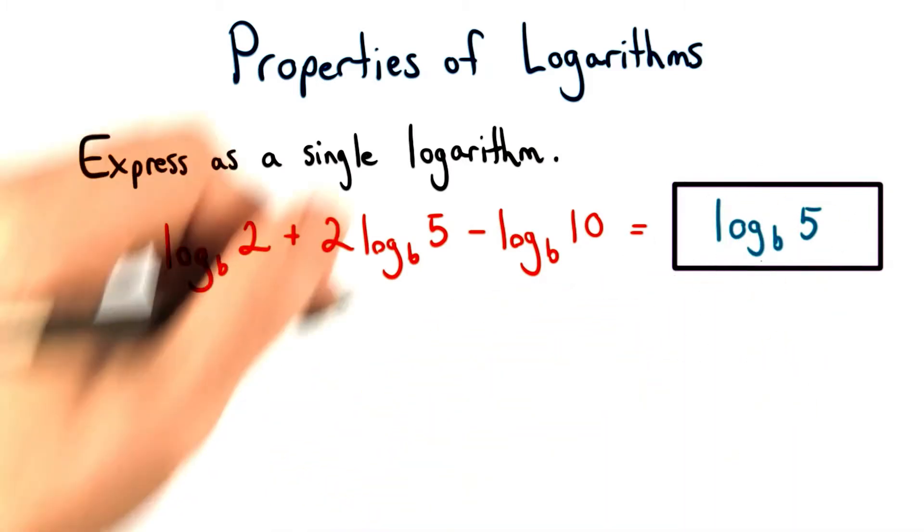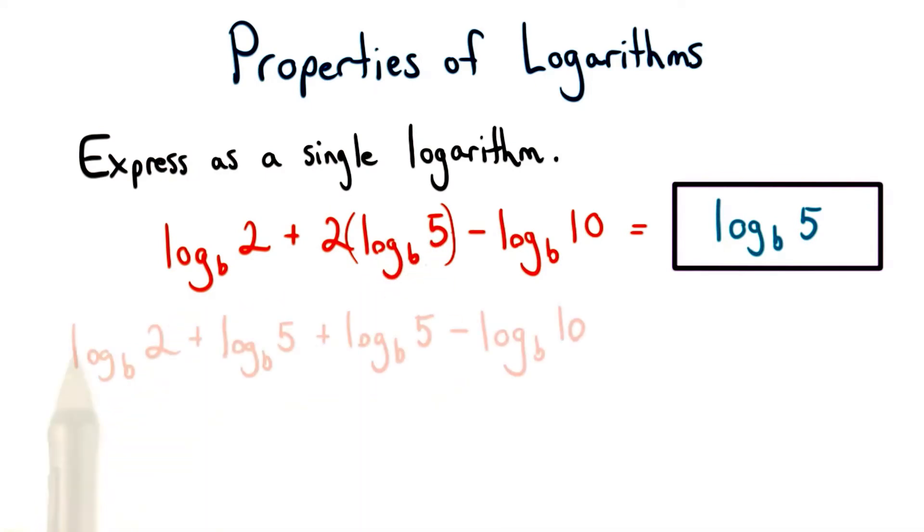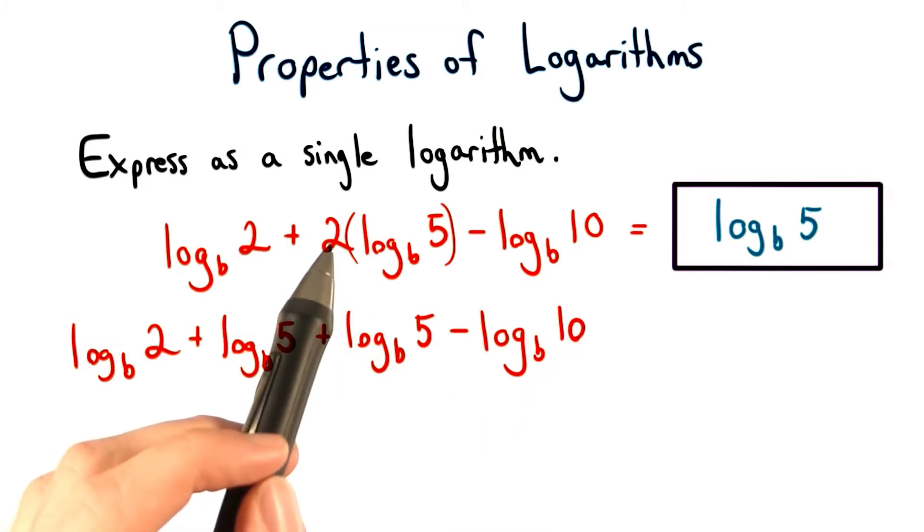Now to start, I think it's best to think about this as two logarithms of base b of 5. If I write this line all out, I see I have log base b of 2 plus log base b of 5 plus log base b of 5 minus log base b of 10. And notice that there are two log base b's of 5 here.